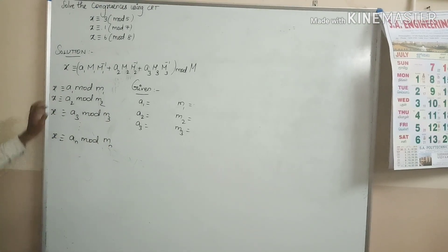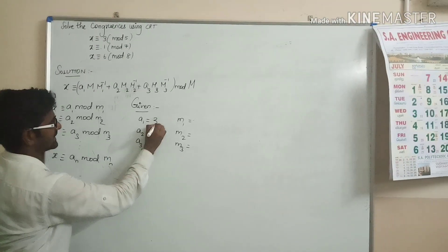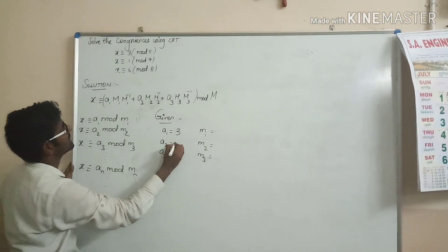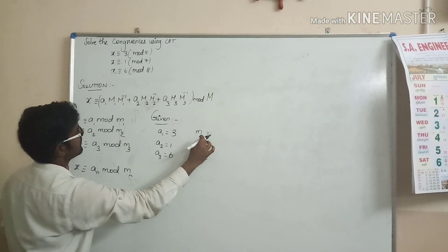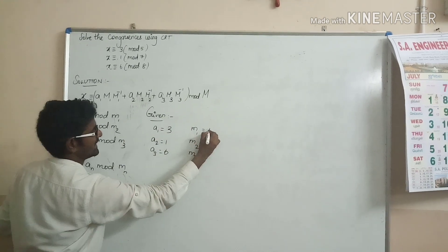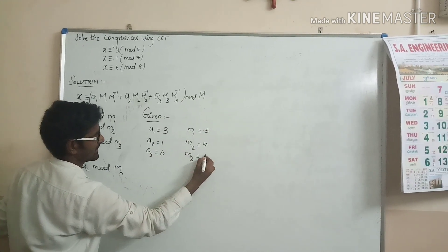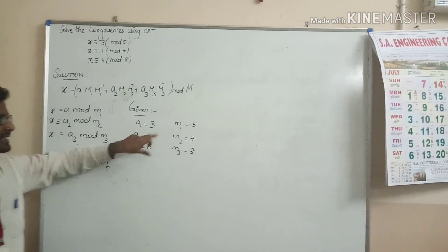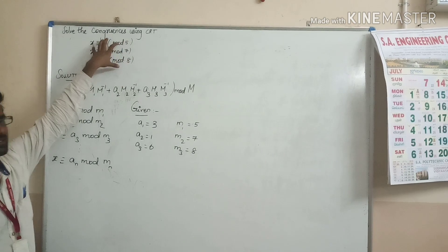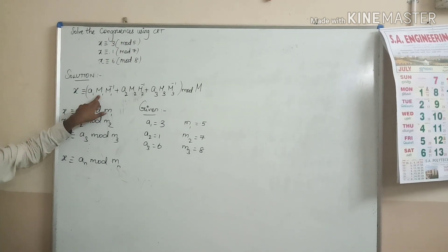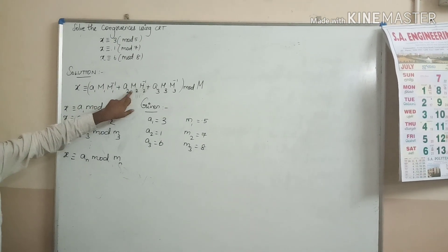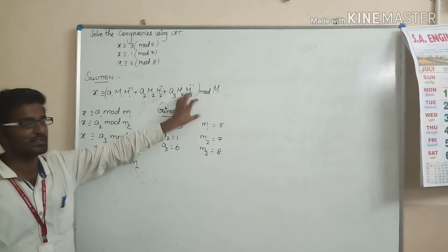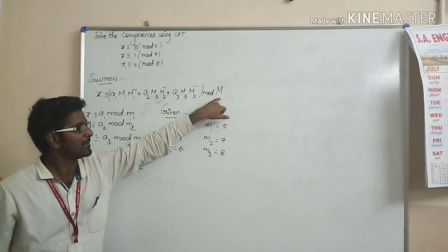So what is a1? It is 3 — it is given. What is a2? a3 is 6. And m1, m2, m3 are 5, 7, and 8 respectively. Now we will have to calculate capital M1 and its inverse, capital M2 and its inverse, capital M3 and its inverse.